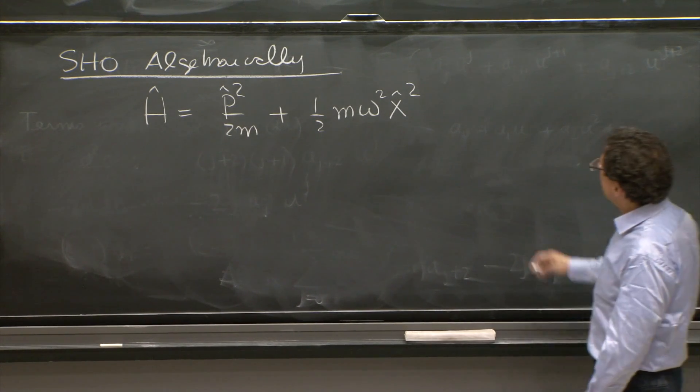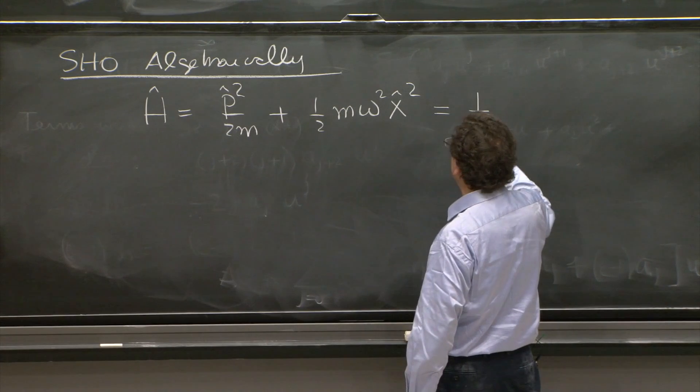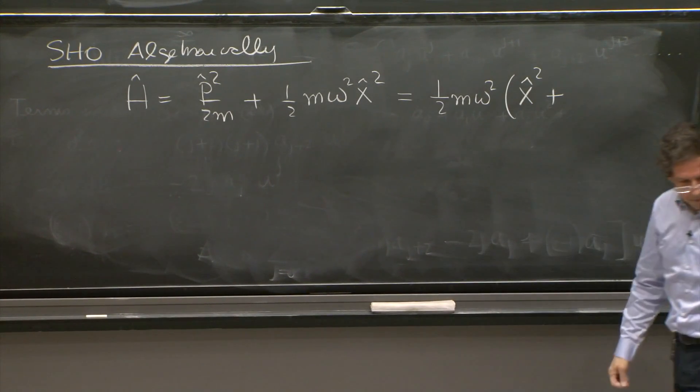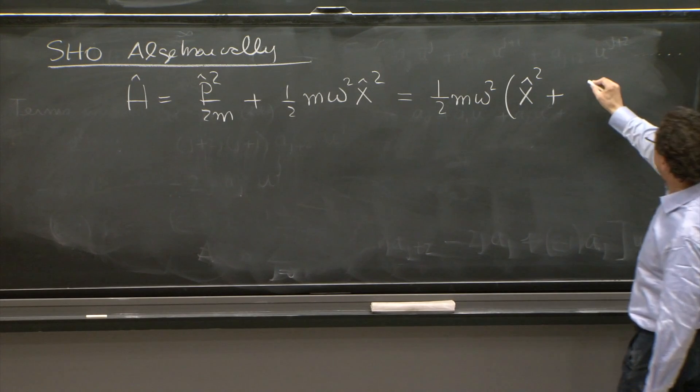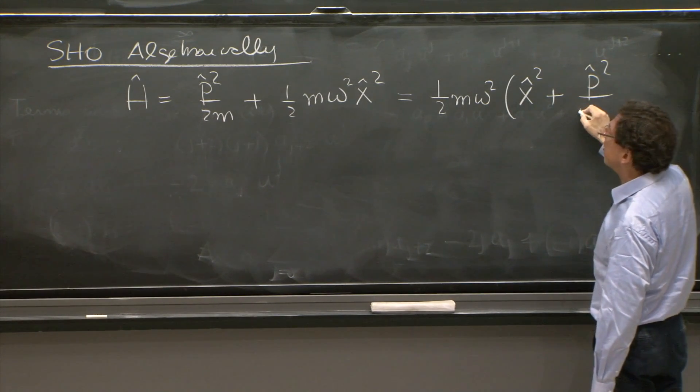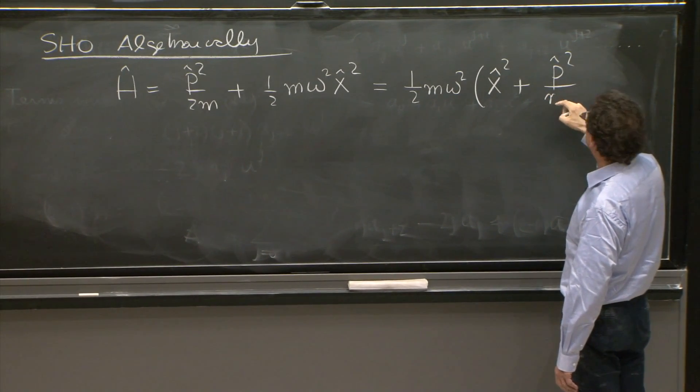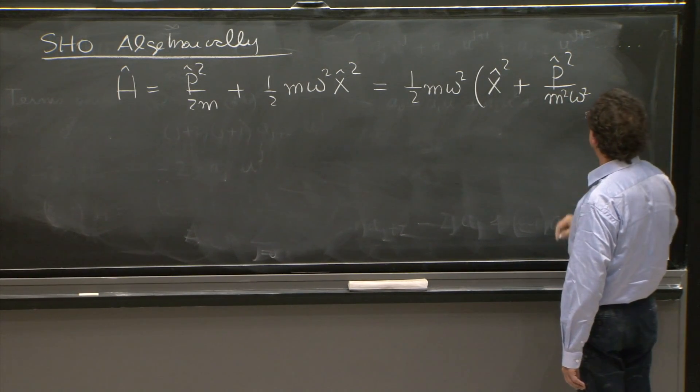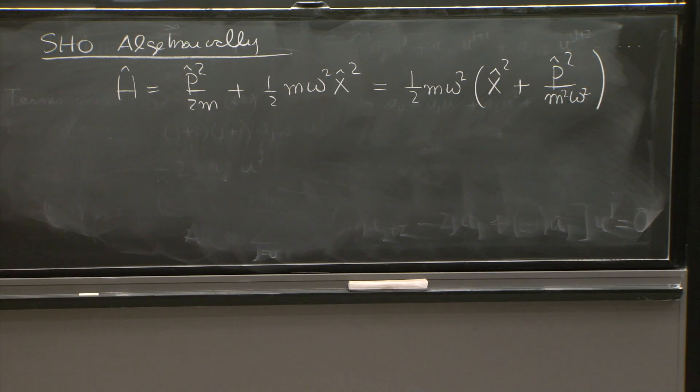What we do is observe that there's some sort of sum of squares plus p squared over m, p squared over m squared over omega squared. So sum of two things squared. Now, the idea that we have is to try to factorize the Hamiltonian.